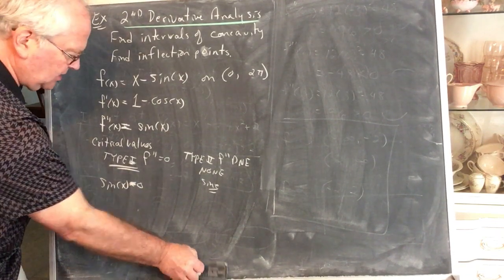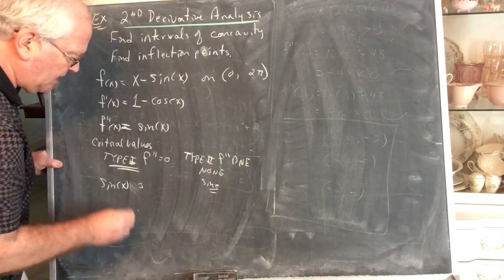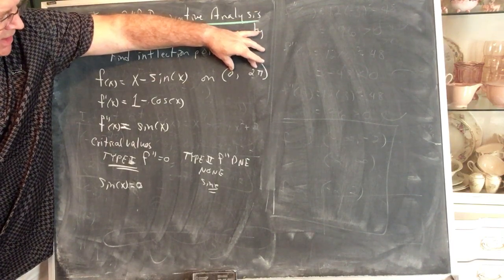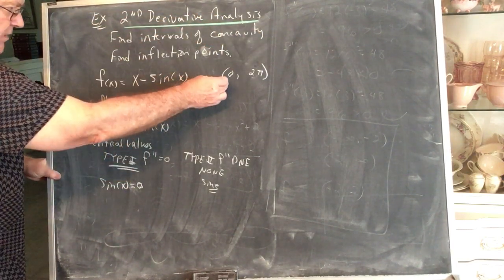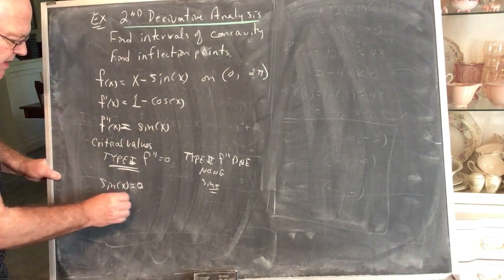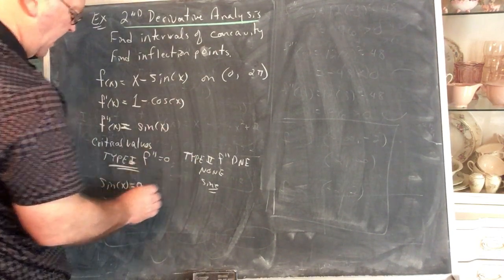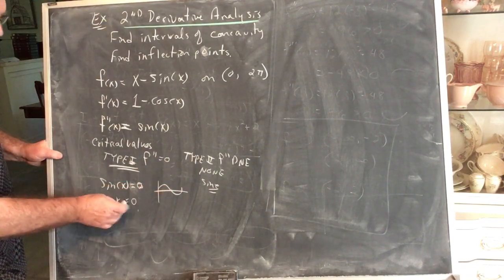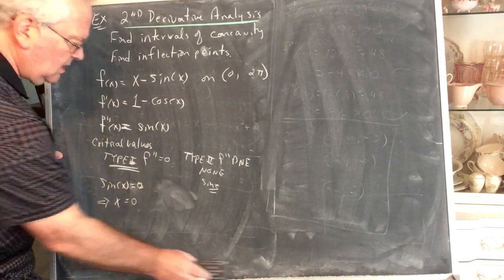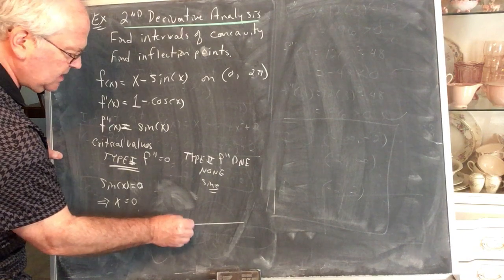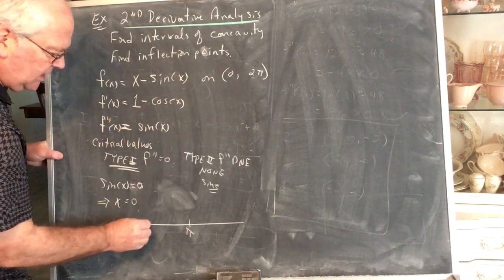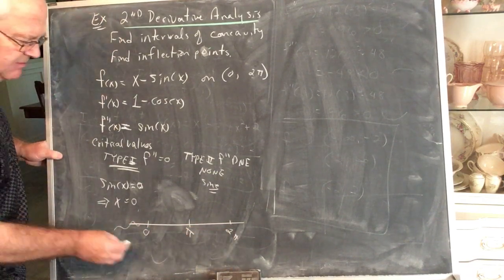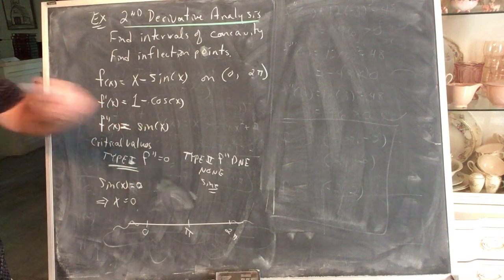We know sine of x equals 0 at 0, π, and 2π. But we're only in the open interval not including 0 and not including 2π. So the only solution in the interval of interest is x = π — the only place sine equals 0 within our interval. The only cut value we have is at π.